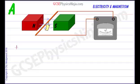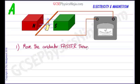So the first thing that we can say to make the EMF larger is to move the conductor faster through the magnetic field.